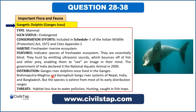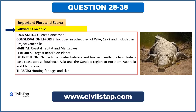The saltwater crocodile is a least concerned species included in Schedule 1 of WPA. Project Crocodile was started in 1975 for its conservation, making it an important species to study. Its habitat is mainly coastal habitats and mangroves. It is one of the largest reptiles on the planet and is mainly found in Indian wetlands and Southeast Asian countries.